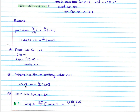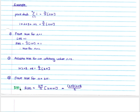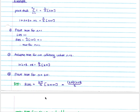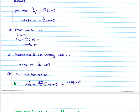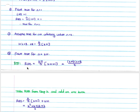In the next step we assume it's true for an arbitrary value n equals k. So we assume that 1 plus 2 plus 3 up to k equals k over 2 times (k plus 1). We assume that sum is k over 2 times (k plus 1). Now we need to prove it's true for the next value, k plus 1. We are required to prove that the right hand side equals k plus 1 over 2 times (k plus 2), by substituting k plus 1 in for k.